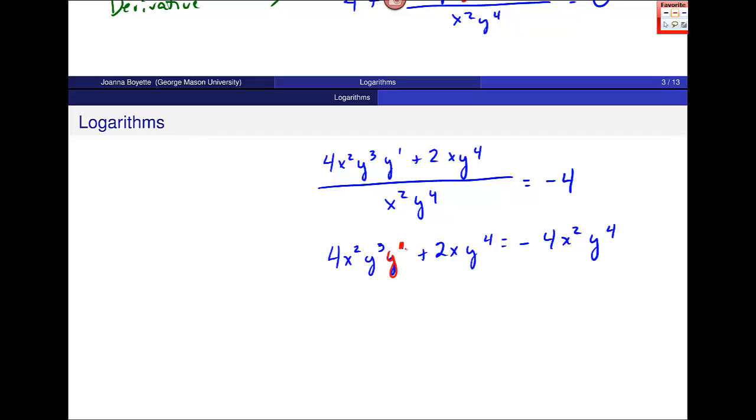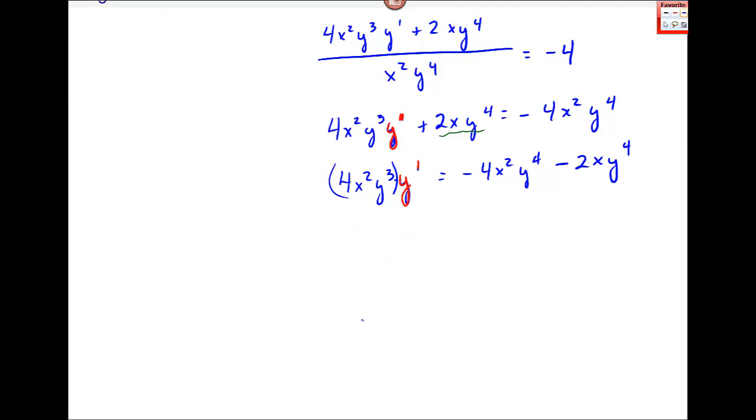I have now this y prime that I'm still looking for. I'm still trying to do that. Maybe I'll move this piece over—just subtract that from both sides since it's added to my y prime piece. So I get 4x²y³y' equals negative 4x²y⁴ minus 2xy⁴. Finally, this is still what I'm looking for right here in red. At this point, this is multiplied by this quantity, 4x²y³. So if I divide both sides by that, I should get y' by itself. So here I have y' equals, and then I'll put all of this on the original right-hand side, divided by 4x²y³.